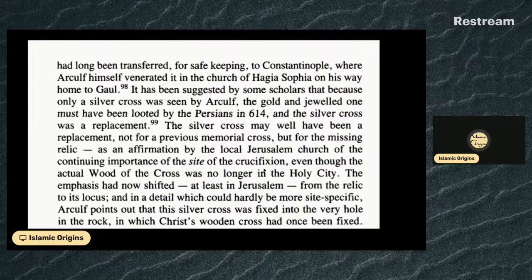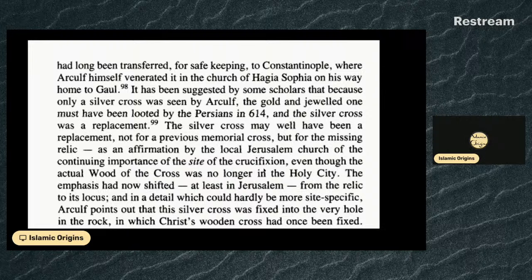The silver cross may well have been a replacement not for a previous memorial cross, but for the missing relic — as an affirmation by the local Jerusalem church of the continuing importance of the site of the crucifixion, even though the actual wood of the cross was no longer in the holy city. The emphasis had now shifted, at least in Jerusalem, from the relic to its locus. Arculf points out that this silver cross was fixed into the very hole in the rock in which Christ's wooden cross had once been fixed.